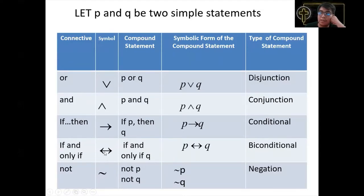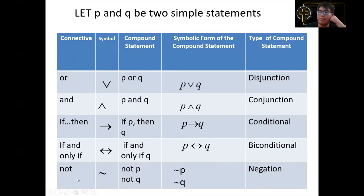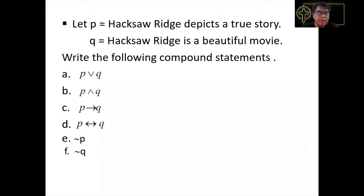Another connective is the biconditional, symbolized by a double arrow ↔, read as 'P if and only if Q.' The last connector is negation or NOT, symbolized by ¬, read as 'not P' and 'not Q,' which is called the negation of the statement.